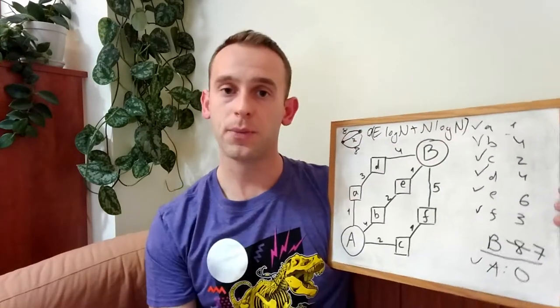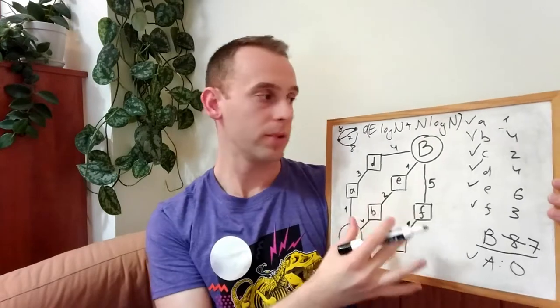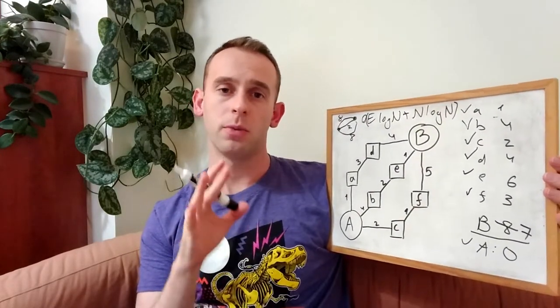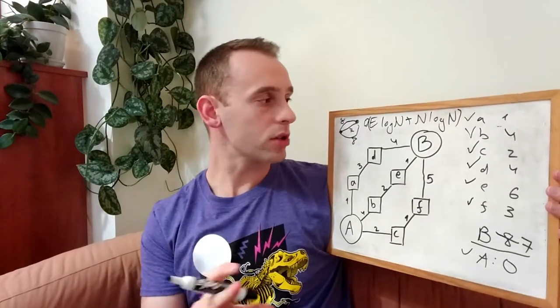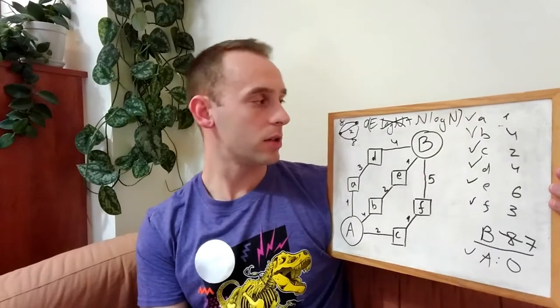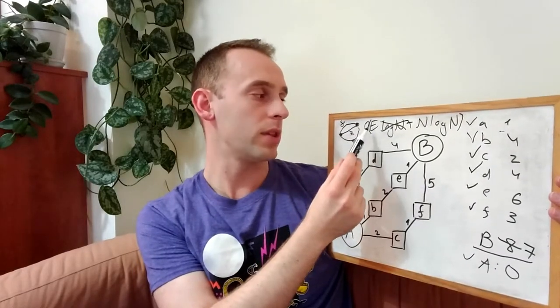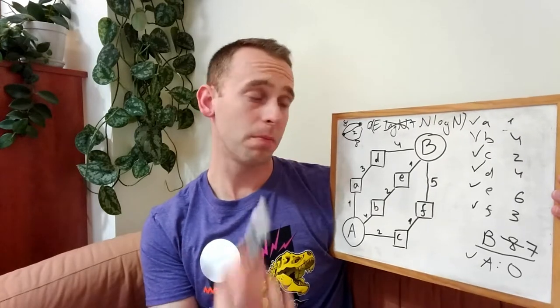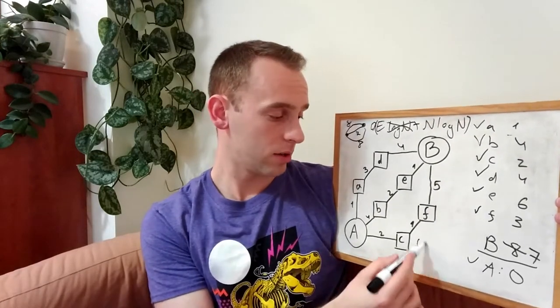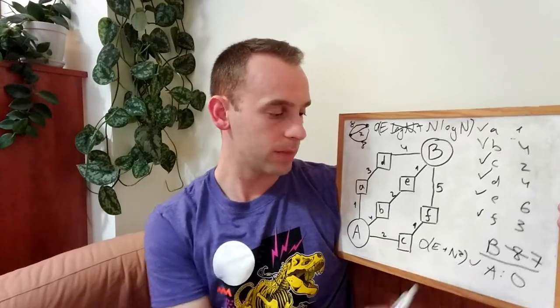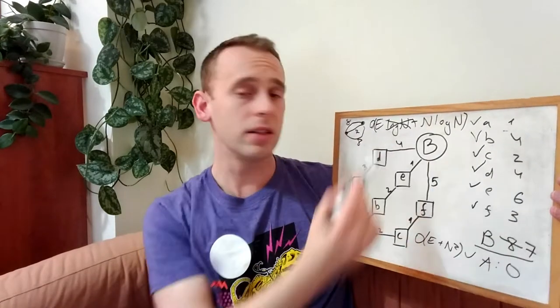Now I will not go into details, but if you use a Fibonacci heap, which is another data structure, you can get rid of this log, and you will end up with the complexity of E plus N log N, which is better than the complexity we got before, which is E plus N squared for the simple list. So this is the complexity of the Dijkstra algorithm.